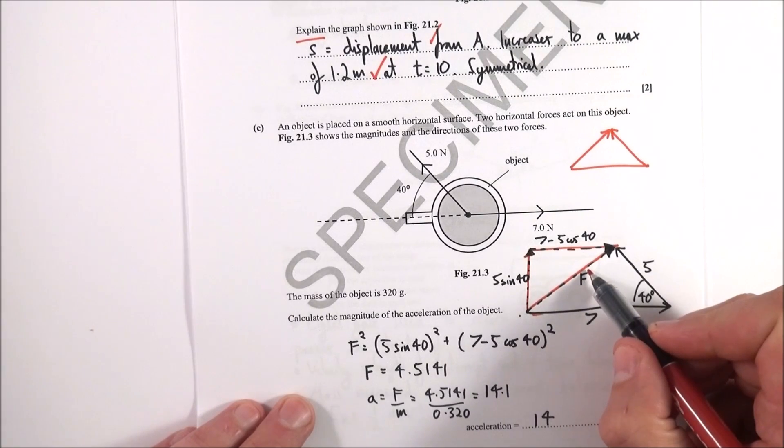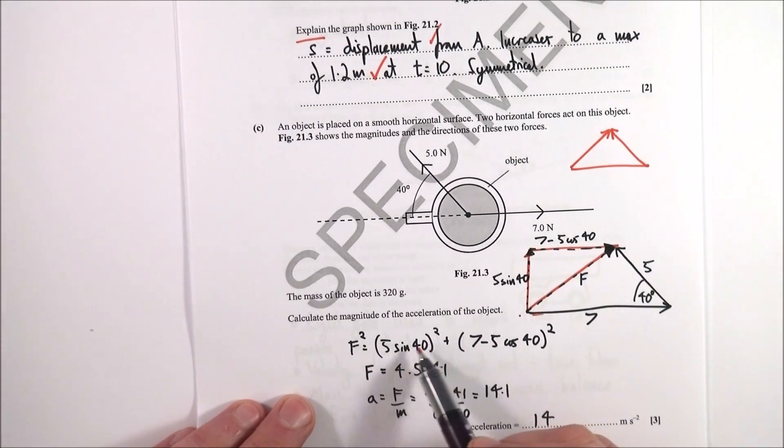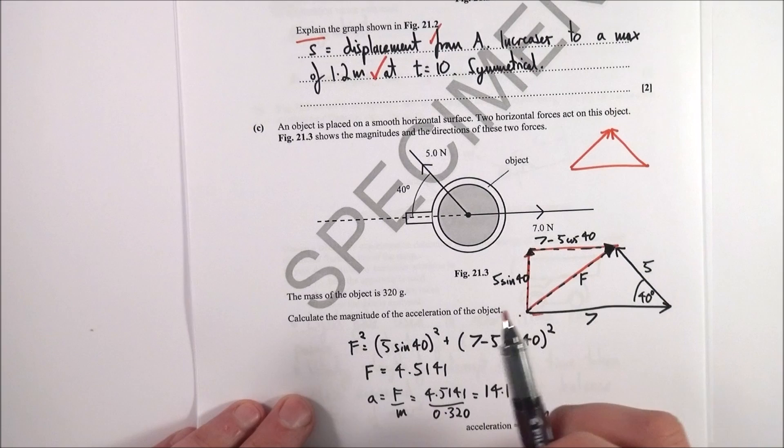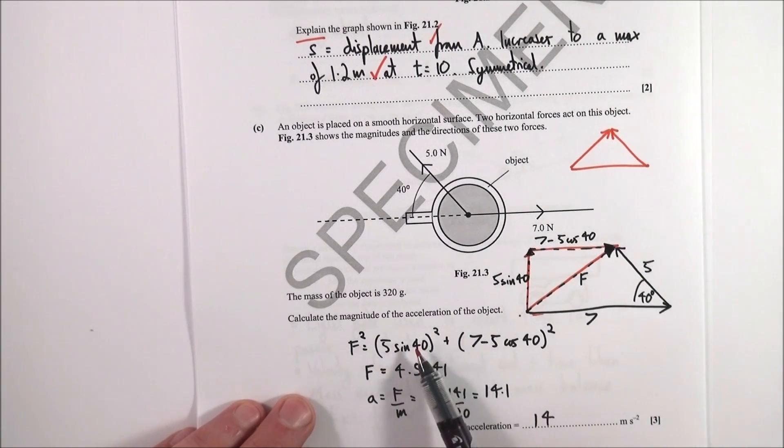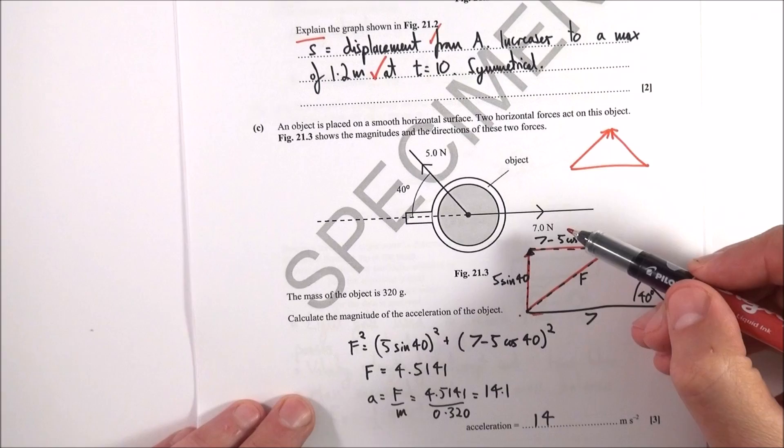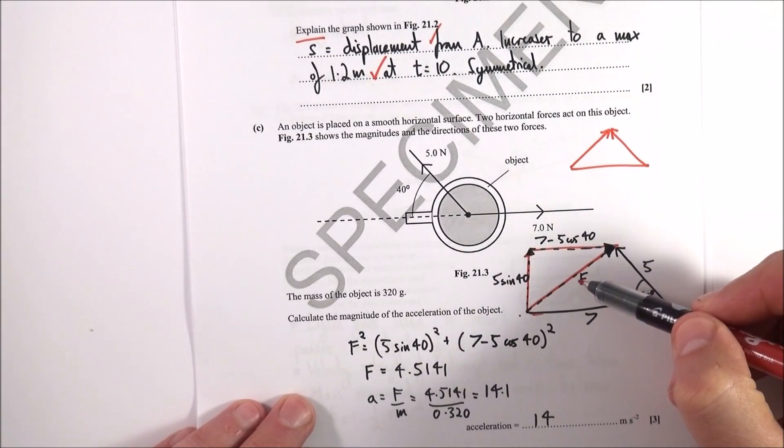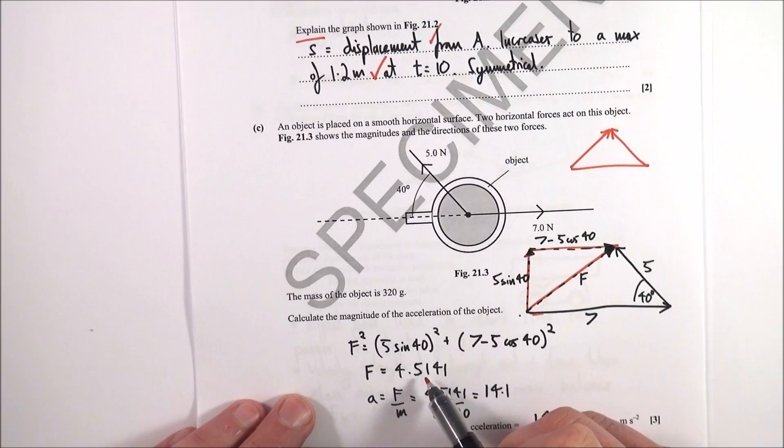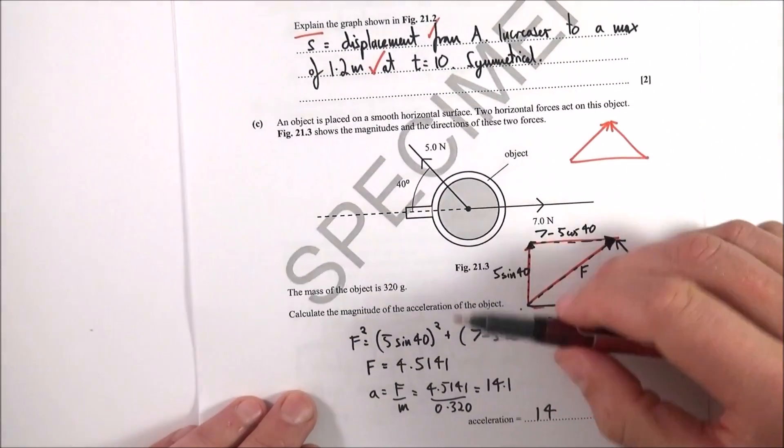To work out the size of force F, I then just used some Pythagoras. So you've got a squared equals b squared plus c squared. So I put the numbers into my calculator, so I've got this side squared plus this side squared, and then I square rooted it to find the size of the force. And the force is 4.5141.